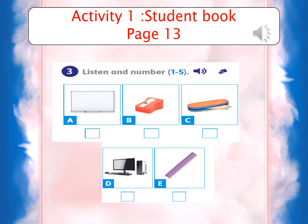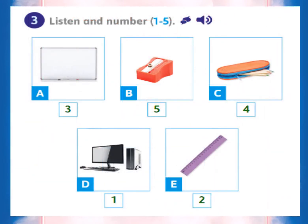Very good. After listening to the CD player, let me check your answers. Number one — number one. Number two — E. Number three — A. Number four — C. Number five — B. Very good.